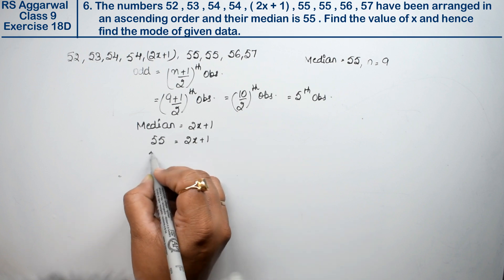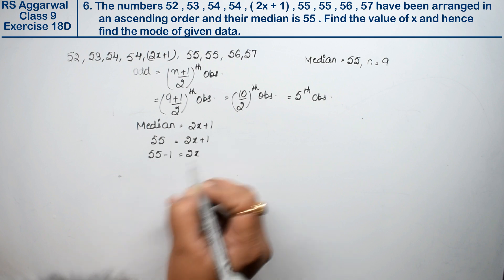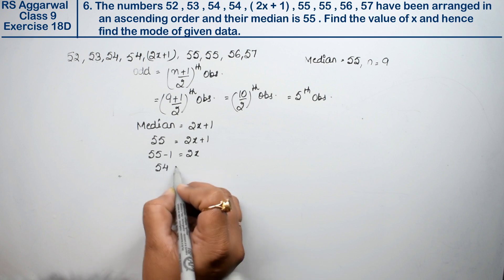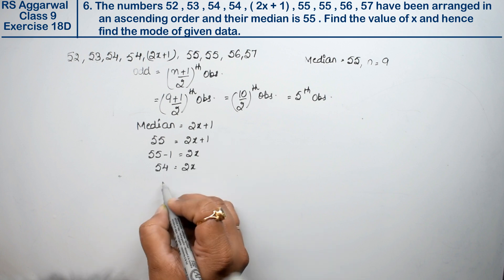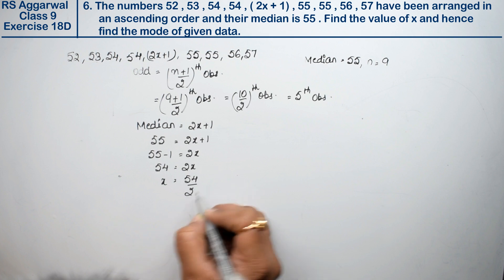Bringing 1 to the other side, 55 minus 1 equals 2x, so 54 equals 2x. Therefore x equals 54 divided by 2, which is 27. x is 27.